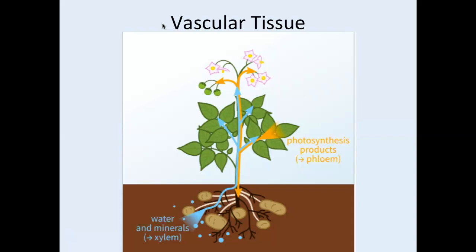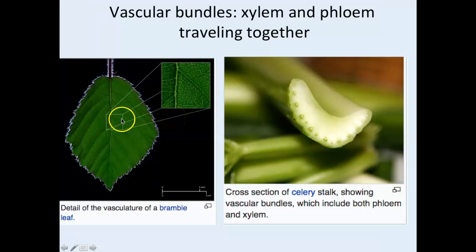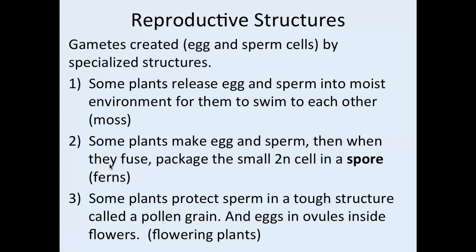Having vascular tissue is key to allowing larger plants to evolve — you're not tied to the surface of the earth. The phloem and xylem travel together, just like arteries and veins travel together in animals. The unit where xylem and phloem travel together is called a vascular bundle. You can see these in the lines of a leaf, and even in a celery stalk — those round areas are the vascular bundles.